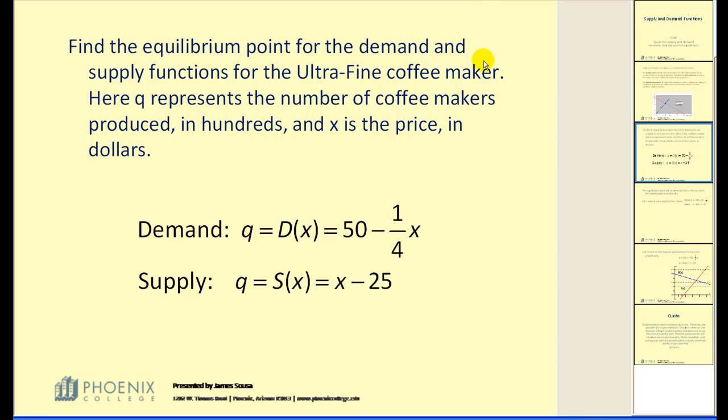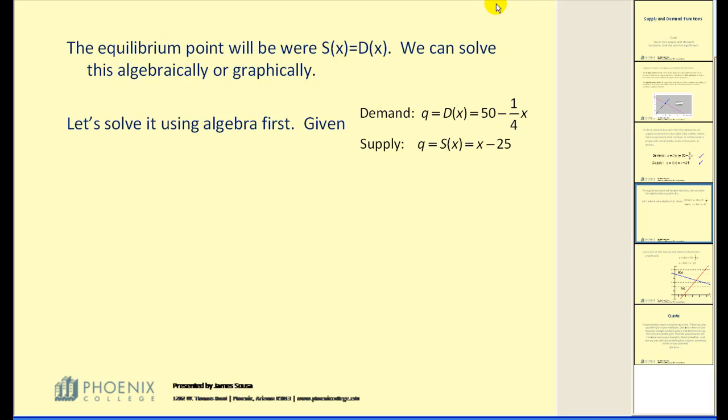Find the equilibrium point for the demand and supply functions for the ultra-fine coffee maker, where Q represents the number of coffee makers produced in hundreds, and X is the price in dollars. So we want to find where the demand curve is equal to the supply curve. Now there are two ways of doing this. We can do it algebraically or graphically. We will do it both.